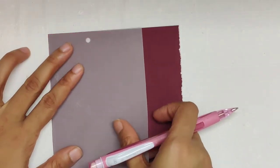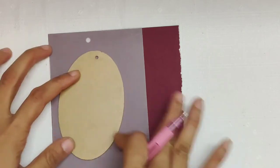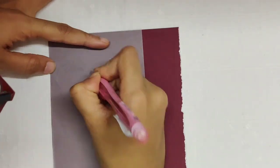And now I'll be tracing the oval shape in order to draw off my design on it.